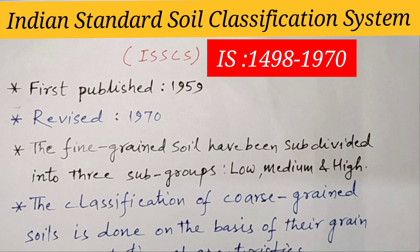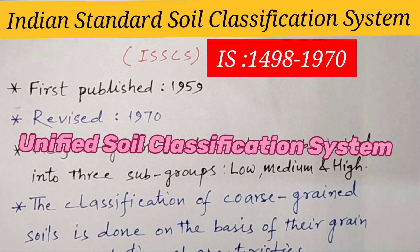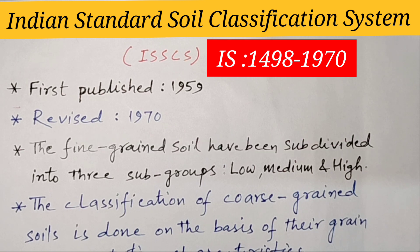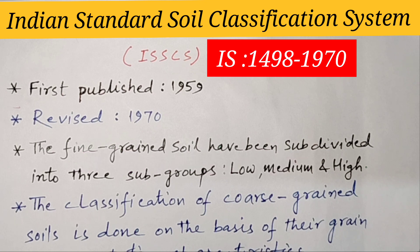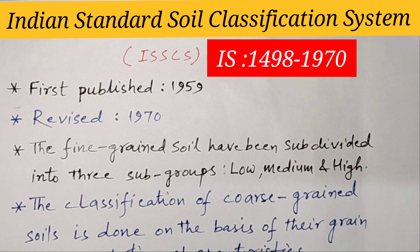Good morning students. In the last two classes, we have studied the Classification as per Unified Soil Classification System and AASTO Classification System. In today's class, we will learn the Classification of Soil as per Indian Standard Soil Classification System. This code is IS-1498-1970, or in short, the IS-ISS system.